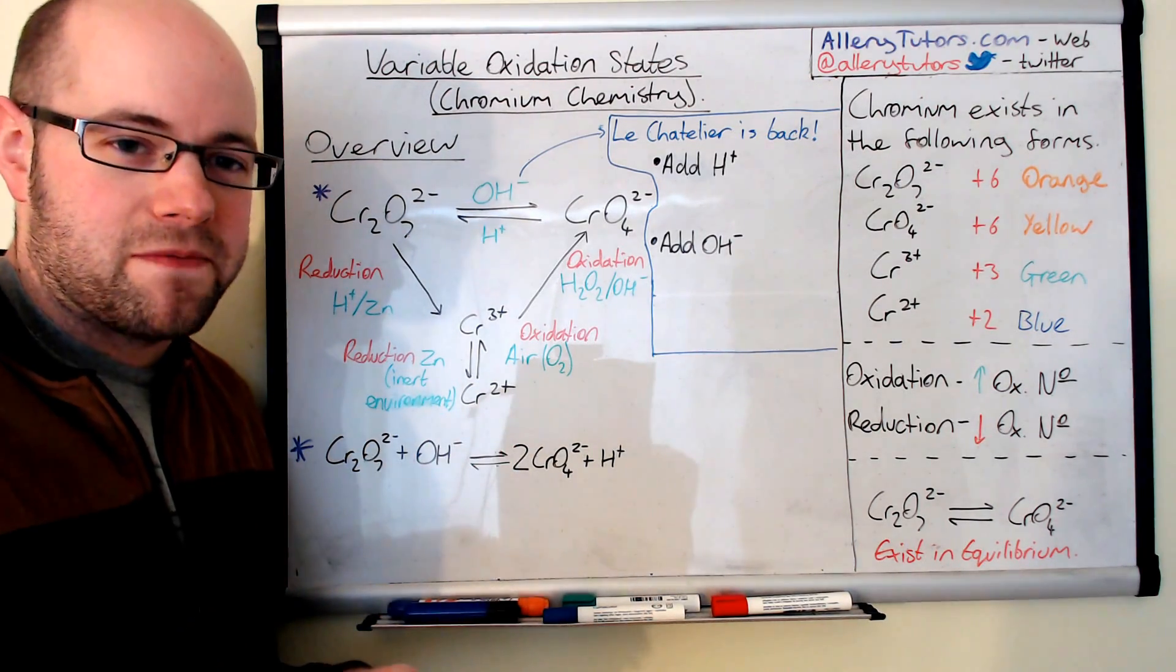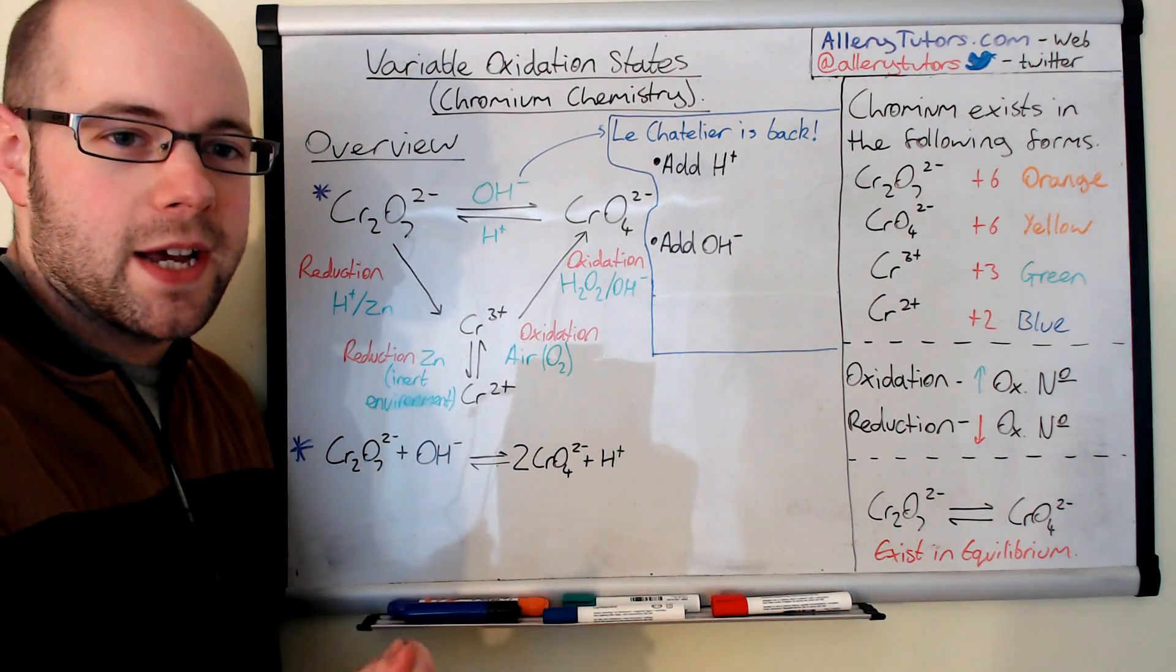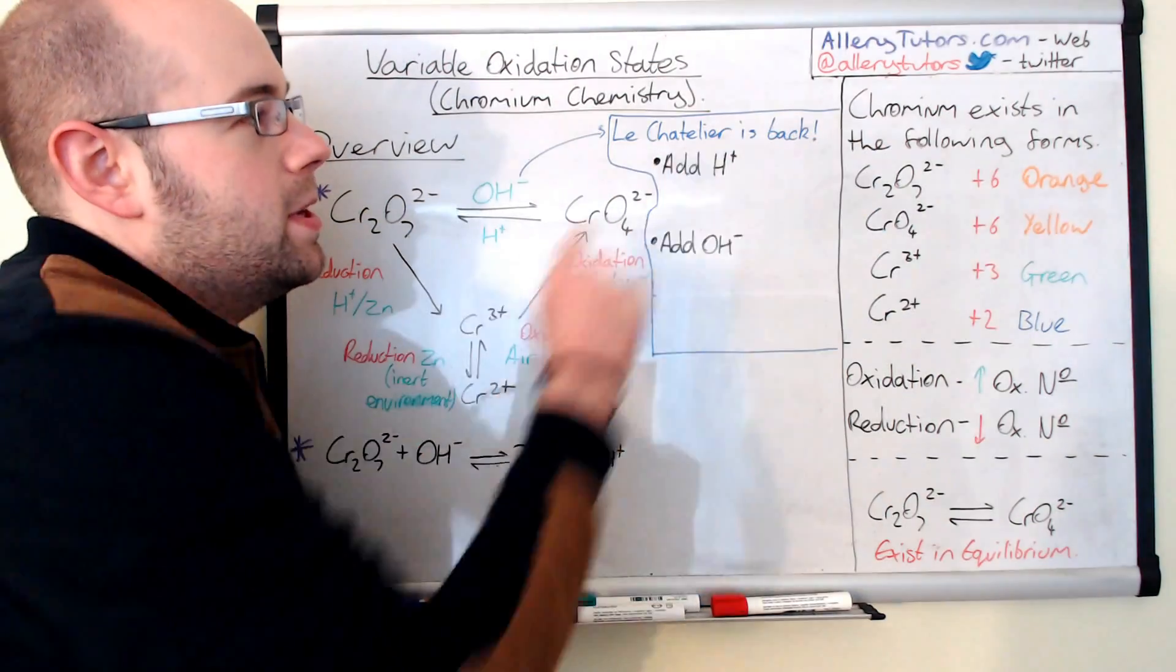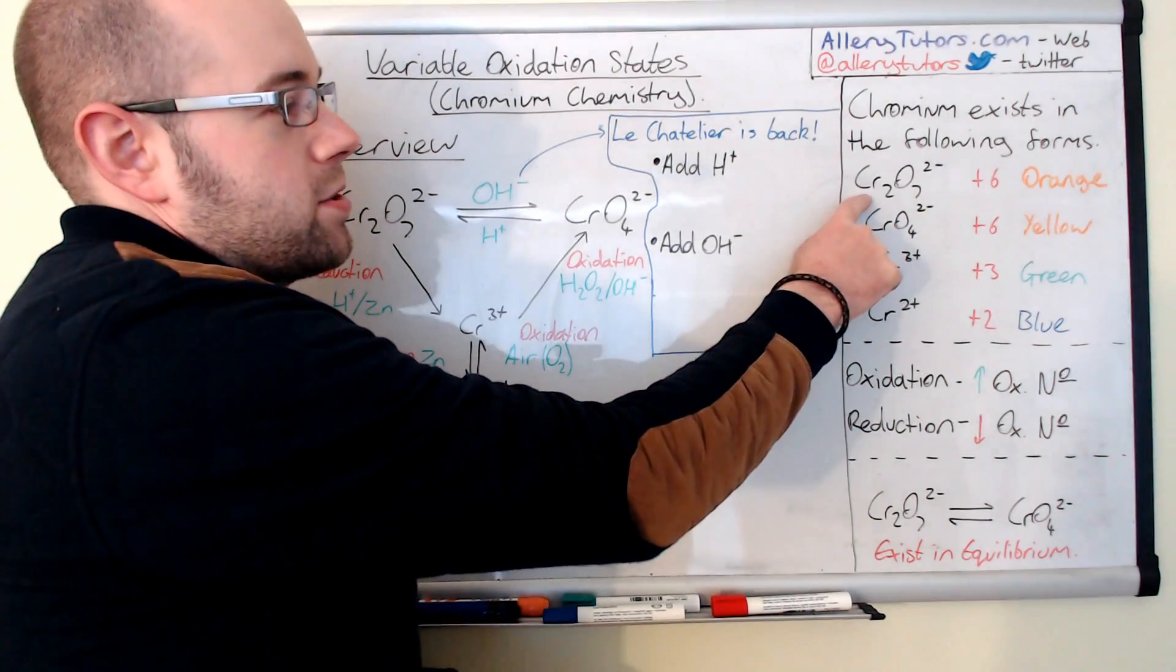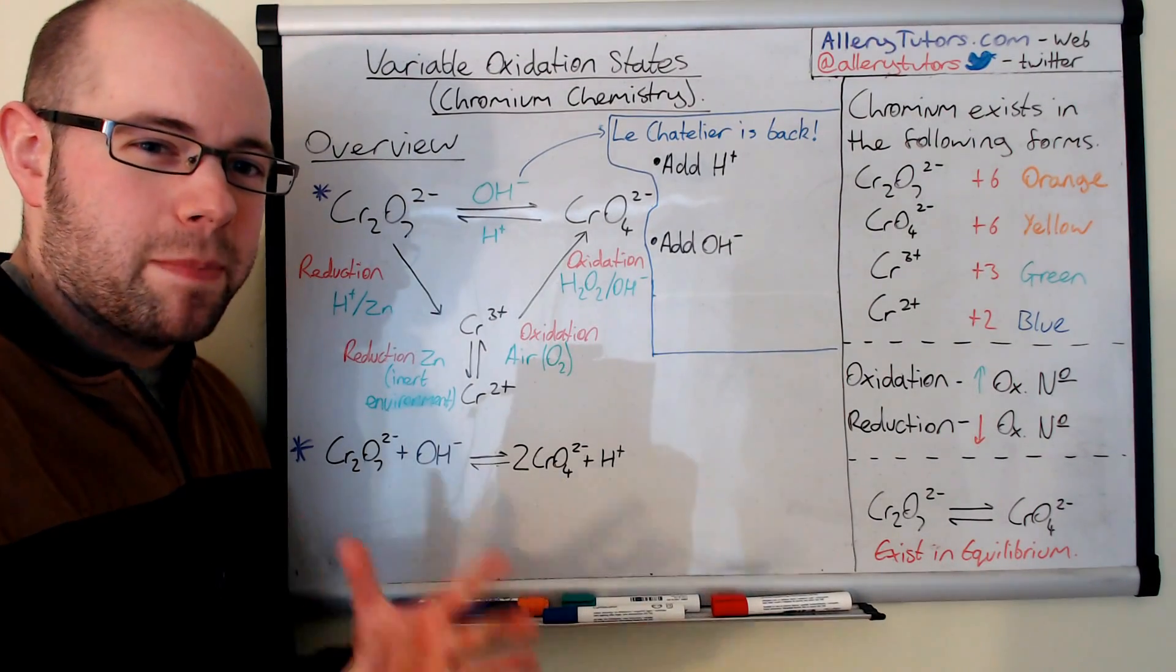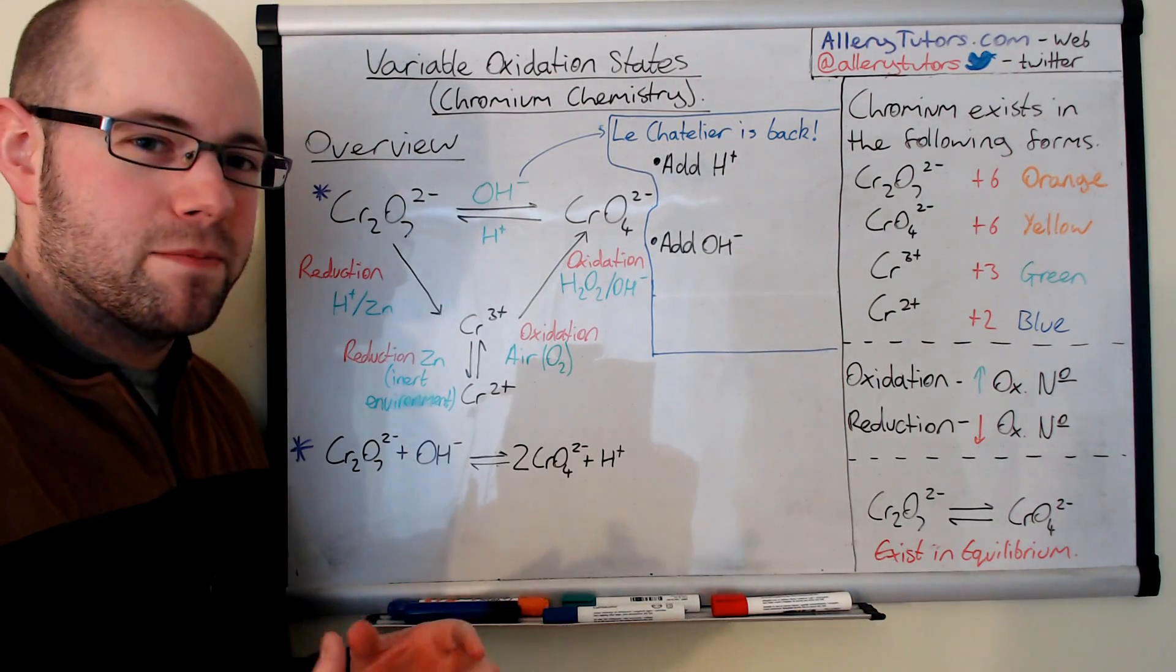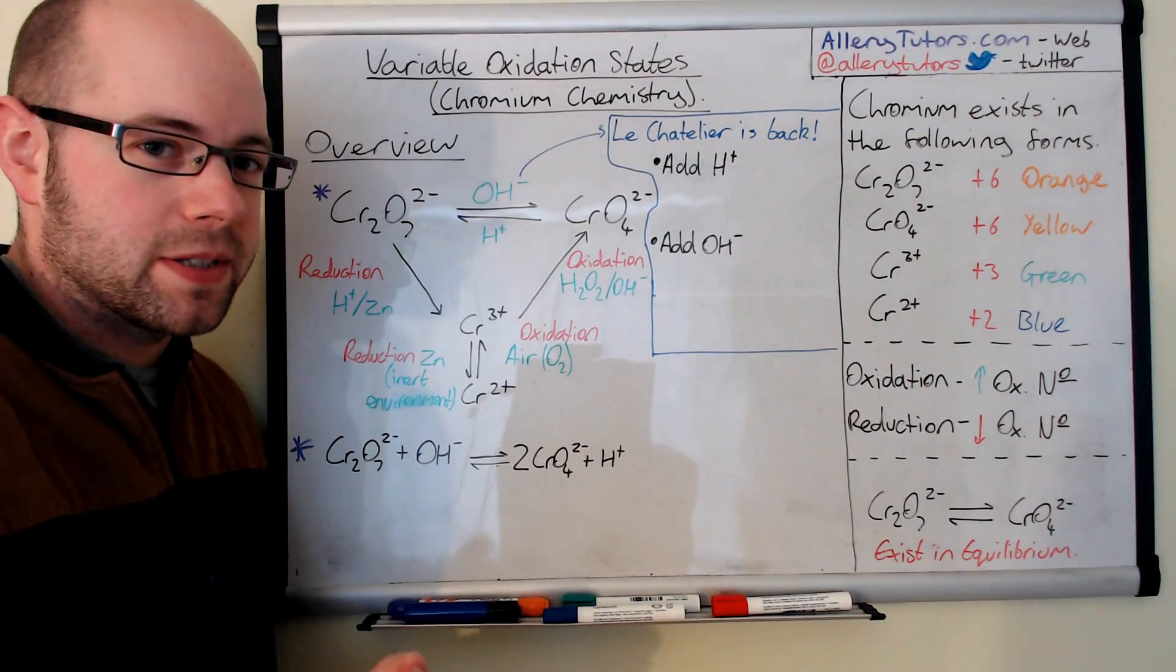So we're going to start with looking at the different types of chromium compounds. I've got these written up on the right here. So we've got chromium exists in the following forms. We've got something called dichromate and this is orange in colour, it's like a pale orange colour. It looks a little bit like iron brew and it has an oxidation state of plus six.